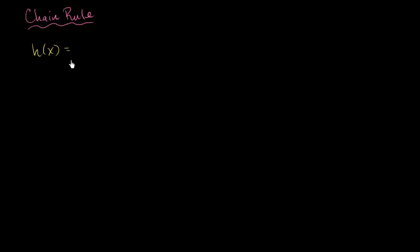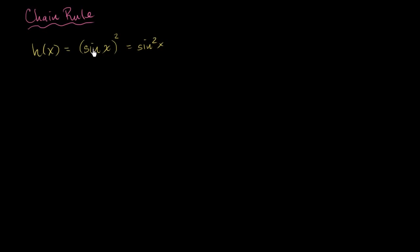So let's say that I have a function h of x, and it is equal to — just for example — sine of x squared. Now, I could have written it like this: sine squared of x, but it'll be a little bit clearer using that notation.